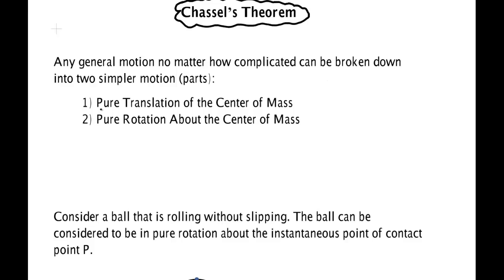Pure translation of the center of mass. That's what we studied all the way up to the chapter on rotation. So treat it like it's a particle with all the mass at the center of mass. And then treat it like it's a spinning wheel with an axis through the center of mass. It won't work anywhere else except the center of mass. But if you do these two and you add them together you get the complicated general motion of any object.